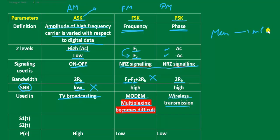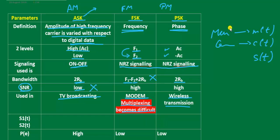The message signal is represented by m(t), the carrier signal by c(t), and the modulated signal by s(t). The message signal is also called the modulating signal. After modulation, the resulting signal is called the modulated signal, represented by s(t).